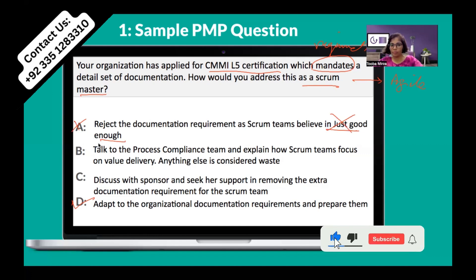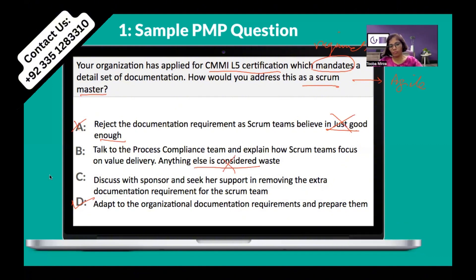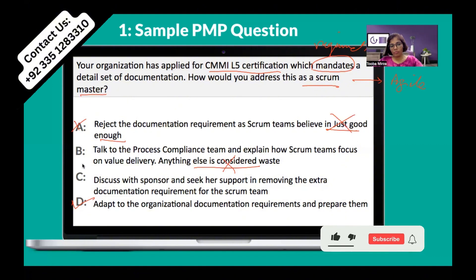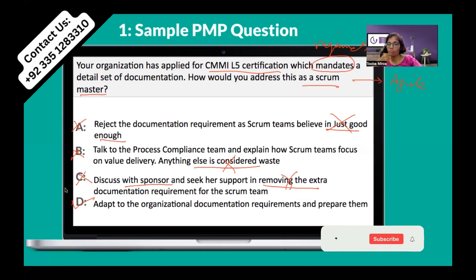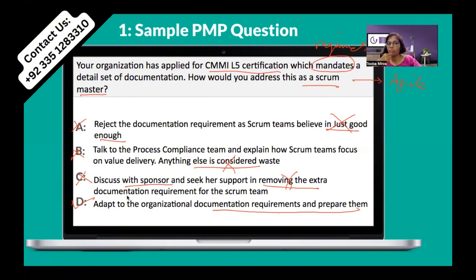Option B says talk to the process compliance team and explain how the scrum team focuses on value delivery and anything else is considered waste. But a scrum team cannot decide themselves whether the documentation part is waste — so option B is also rejected. Option C says discuss with the sponsor and seek her support in removing the extra documentation requirement. Since the question says it's a certification requirement and everything is mandatory, we cannot ask to remove it. So the last option, D — adopt the organization's documentation requirements and prepare them — is the right answer.